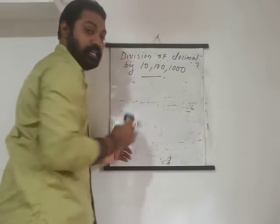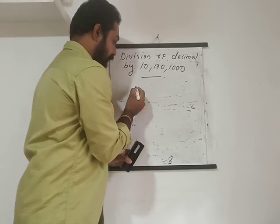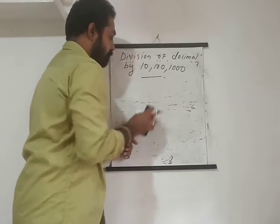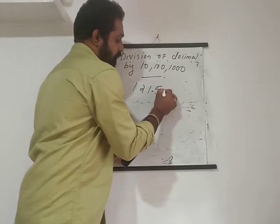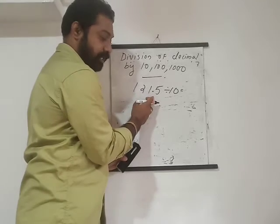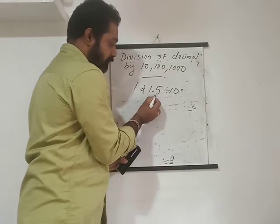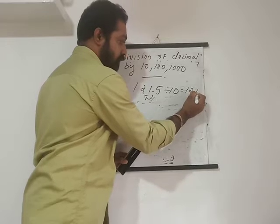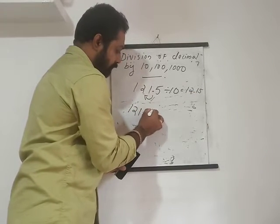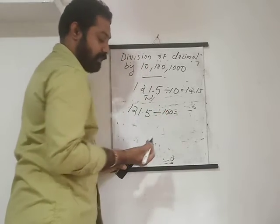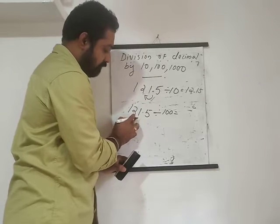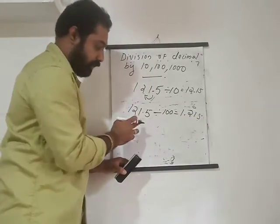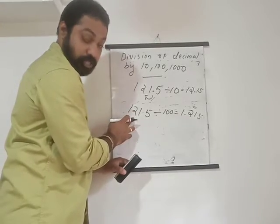Let's look at more examples. Take 121.5 divided by 10. The point moves one place to the left, so it becomes 12.15. Now 121.5 divided by 100: the point moves two places to the left, giving 1.215. You can check the changes yourself — count how many decimal places the point moved.